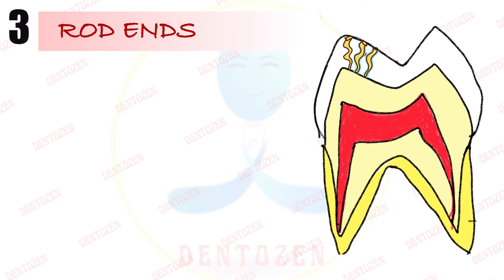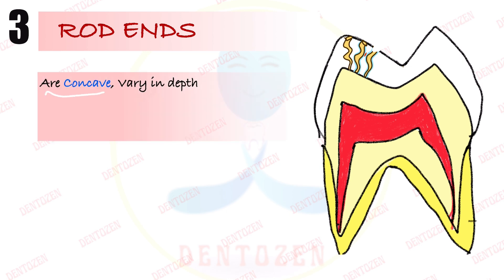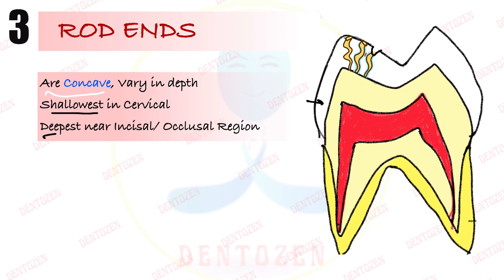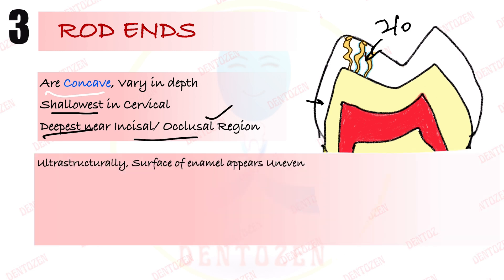Now the third structure: rod ends. Where the rods end on the surface of the enamel, they form a concavity. These rod ends are concave but their depth may vary — they may be shallow in the cervical areas, whereas they are deepest near the incisal or occlusal areas. The surface of the enamel, if seen ultrastructurally under the electron microscope, is very, very uneven — it is not smooth and we can see many structures.